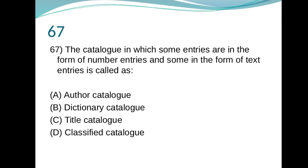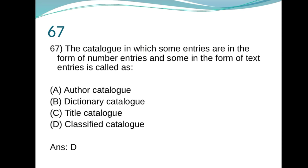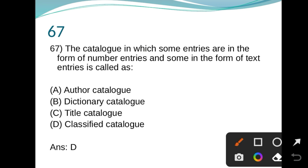67. It is a bibliographical database. Catalog in which some entries are in the form of numbered entries, some in the form of text is called author catalog, dictionary catalog, title catalog, classified catalog. Here D is right, classified catalog.